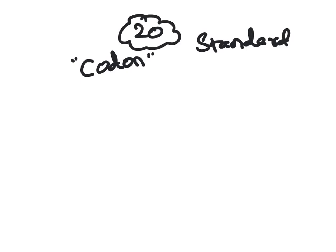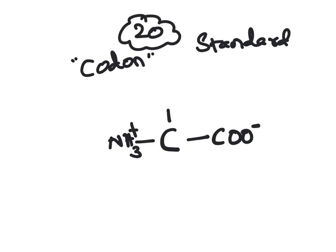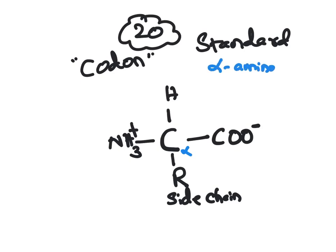The basic structure of an amino acid has a carbon in the center. To that central carbon, a carboxyl group (COO⁻) is attached, an amino group (NH₃⁺) is attached, an H atom, and to the fourth valency an R group — also referred to as the side chain. This central carbon is called the alpha carbon, which is why all 20 standard amino acids are referred to as alpha amino acids.